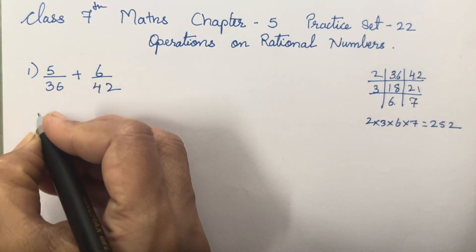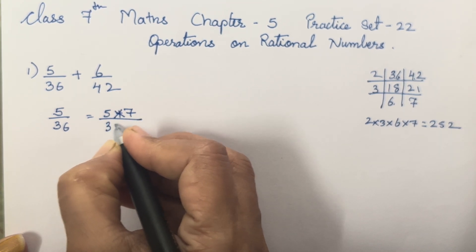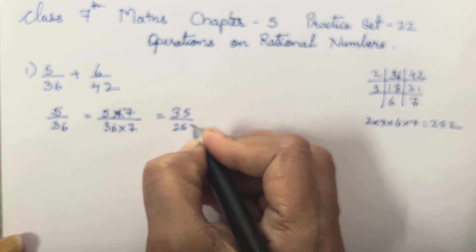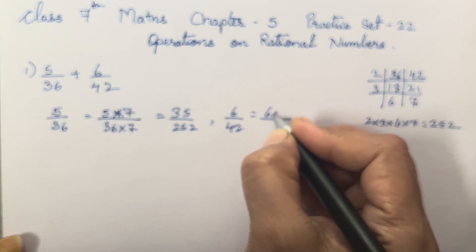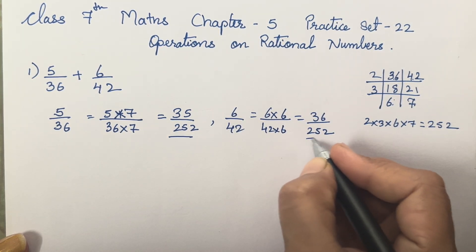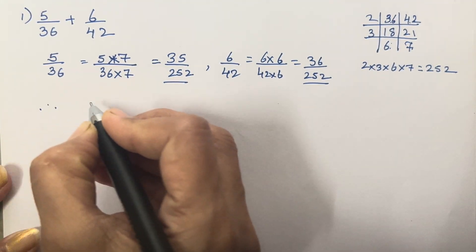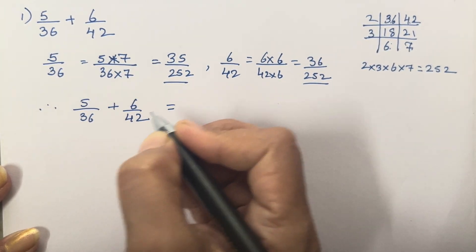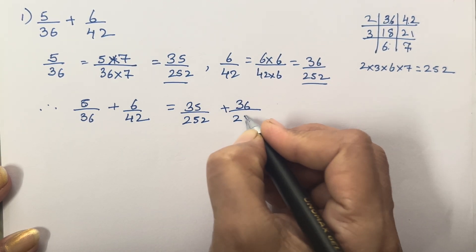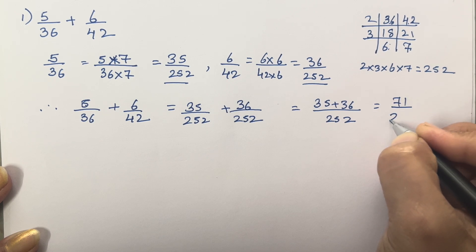Now we will find the addition of the rational numbers. 5 upon 36 becomes 5 × 7 over 36 × 7, which gives you 35 upon 252. For 6 upon 42, we multiply with 6, giving 36 upon 252. Now the denominators of both rational numbers are 252, so we can add them. Therefore 5/36 + 6/42 = 35/252 + 36/252 = 71 upon 252.